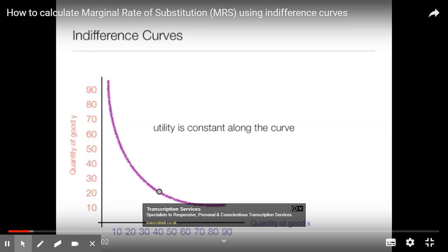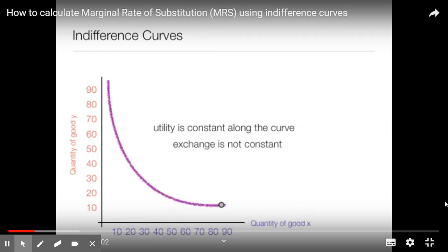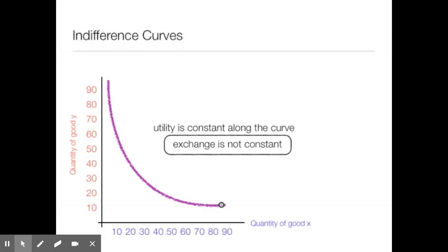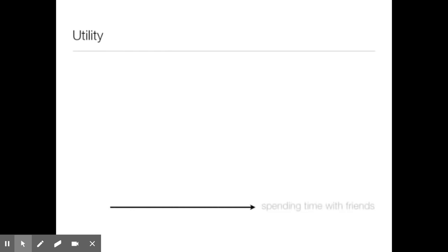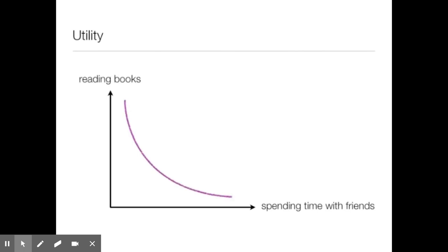But the exchange is not constant — the way you substitute y for x is not constant. Think of utility as happiness or satisfaction; utility is a function of consuming some x or y. There's some type of formula that defines utility. Imagine along the x-axis you have spending time with friends, and y is reading books, and your utility curve looks something like this — along this curve utility is constant. But the way you trade or exchange reading books for spending time with friends is not constant.